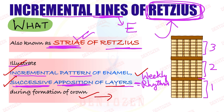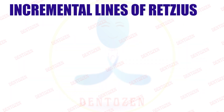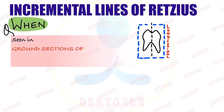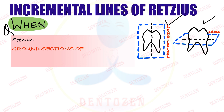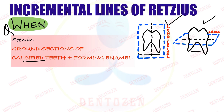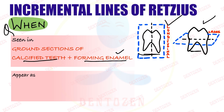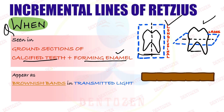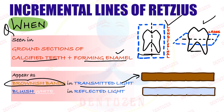These lines can be seen in ground sections of teeth — in both longitudinal and cross sections — of a calcified tooth in which enamel is formed. Based on the type of light used, they can appear different colors: they appear as brownish bands when seen in transmitted light, and as bluish-white when seen under reflected light.